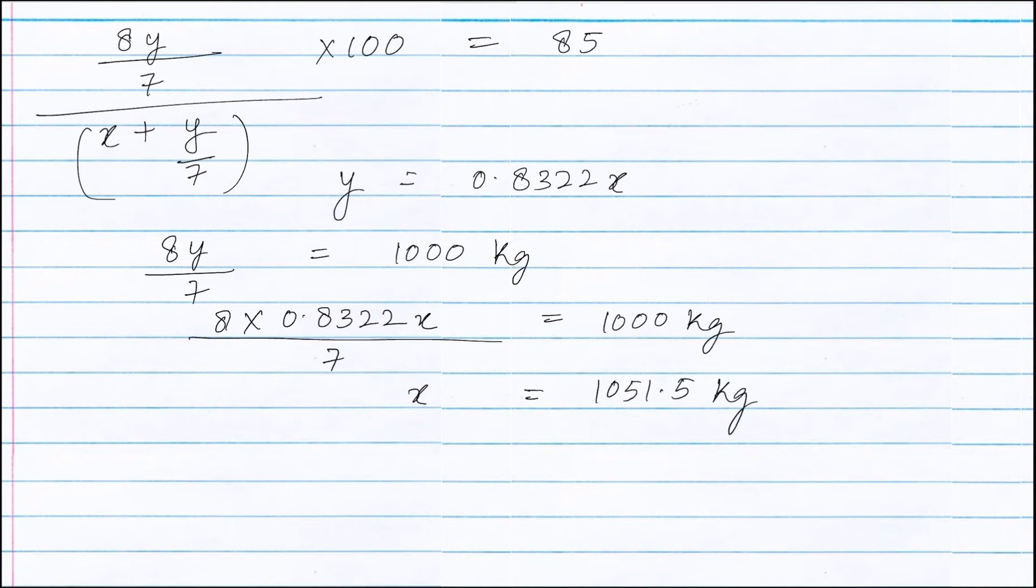Therefore weight of calcium oxide added is 1051.5 kg to get pure calcium carbide whose weight is 1000 kg. Second part of the question.